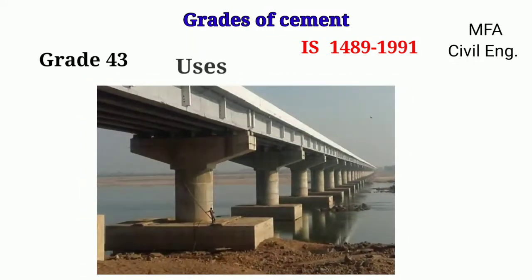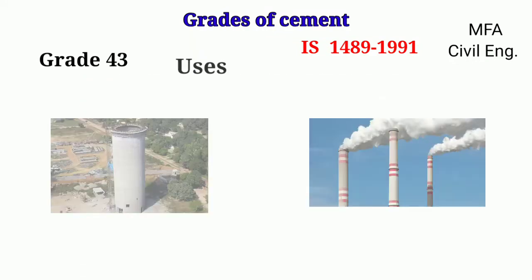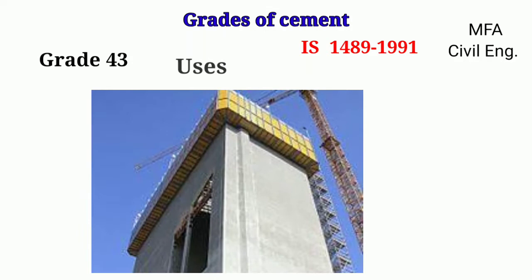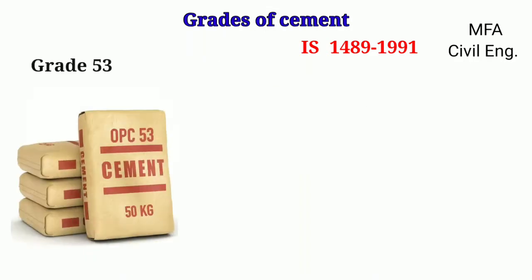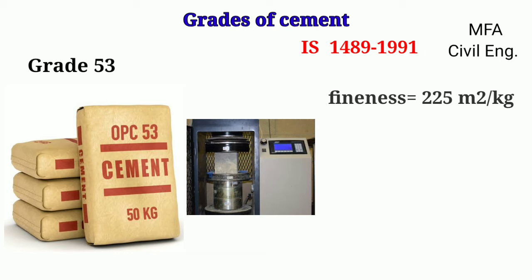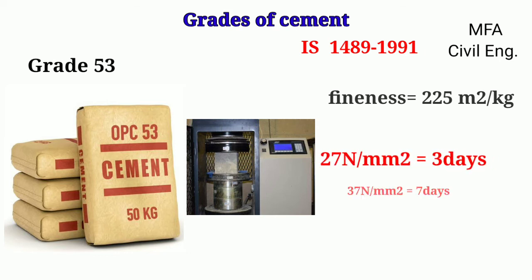43 grade cement is also used in RCC bridges, slabs, and chimneys, and in slip form construction. For a 53 grade of cement, the specific area or fineness is about 225 m² per kg of cement, and the compressive strength of a cube should not be less than 27 N/mm² for three days and 37 N/mm² for seven days.